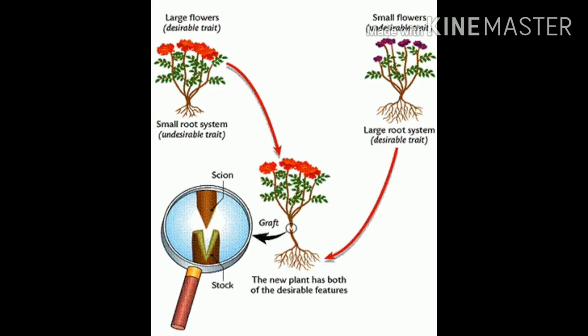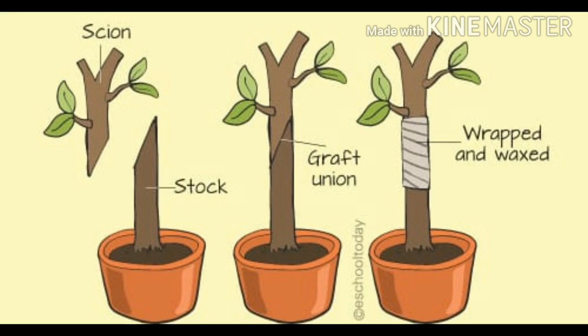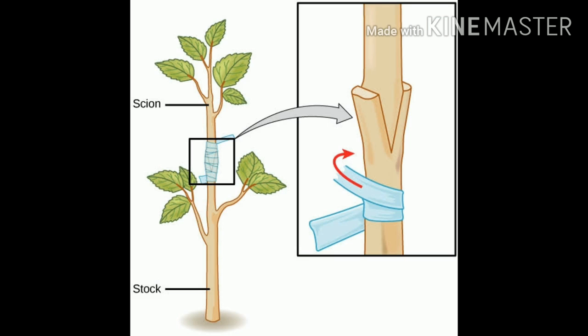So we want the two desirable characters — large flowers and a large root system — to come together in one single plant. For that purpose, there is the grafting process. The plant selected for its roots is known as the stock, which is the second plant in this picture. The first plant, selected for its large flowers, is known as the scion. The scion is grafted onto the second plant, which has the large root system.